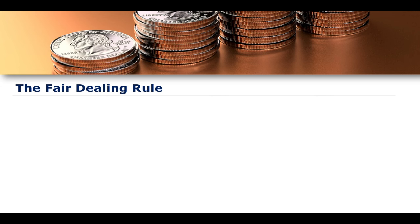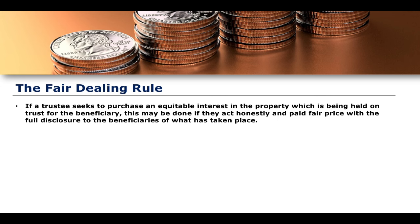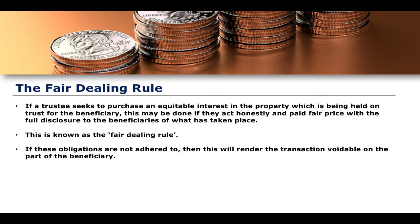In addition to the self-dealing rule, there is also the idea known as the fair dealing rule. Essentially, if a trustee seeks to purchase an equitable interest in property being held on trust for a beneficiary, this may be done if they act honestly and for a fair price with full disclosure to the beneficiaries of what has taken place. This is known as the fair dealing rule and essentially softens some of the sharp edges of the self-dealing rule, giving a degree of flexibility to trustees. If these obligations are not adhered to, however, the transaction will be rendered voidable on the part of the beneficiary, just as with the self-dealing rule.